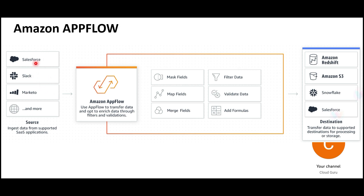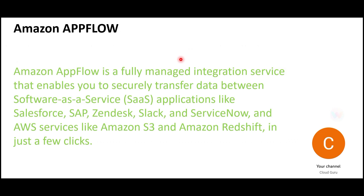You have AppFlow deployed, you have all the SaaS like Slack, Salesforce and so on. Once your data is coming in, you can mask the fields, map the fields - your usual ETL. You can filter the data; for example, you have five departments and you only want to move the finance or sales data, so you filter it. From a certification standpoint, on the right-hand side you can put data into Amazon S3, Redshift, Snowflake, or Salesforce. Snowflake implementations are often customized to work on AWS. You can apply formulas, validate data, map and merge fields - any ETL processing using Glue.